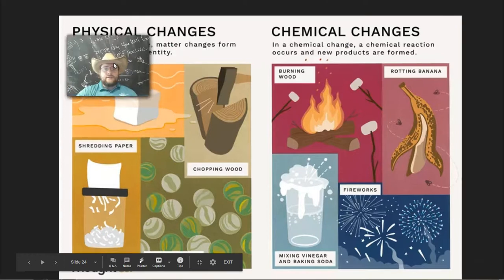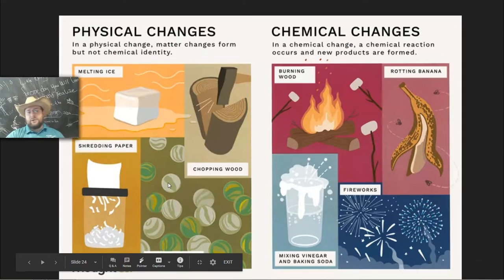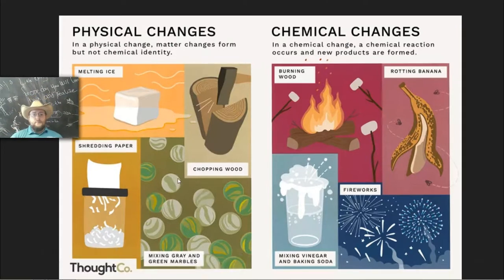Here's another set of examples to help you really drive this across. Melting ice, shredding of paper, cutting something like chopping the wood, or mixing something. All of those are examples of changes that do not change the chemical identity of the matter, and therefore physical.